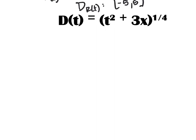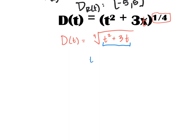For d(t) = (t² + 3t) to the one-fourth power: no rational function to worry about dividing by zero, but the one-fourth power is an even root. I'll rewrite d(t) as the fourth root of (t² + 3t). Since there's no denominator restriction, I just need t² + 3t to be greater than or equal to zero.